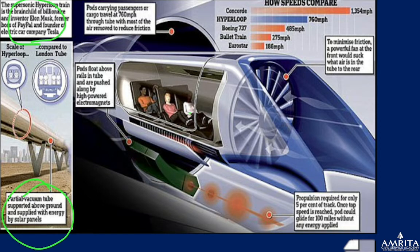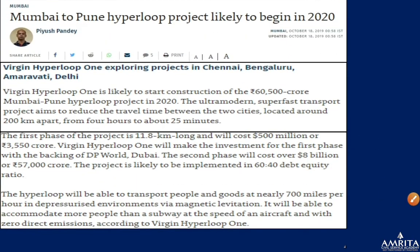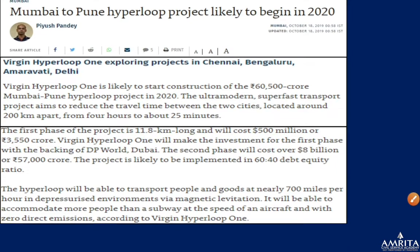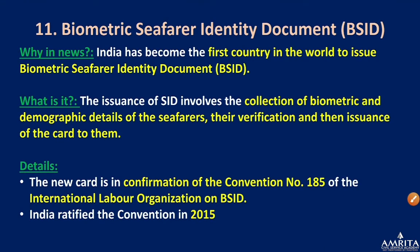The hyperloop runs in a partial vacuum tube — powerful fans suck air near the tube to minimize friction, enabling very high speeds. The Mumbai to Pune hyperloop was likely to begin in 2020. The first phase is 11.8 kilometers long, costing 800 million dollars (approximately 5,550 crores). Virgin Hyperloop One will make investment for the first phase.